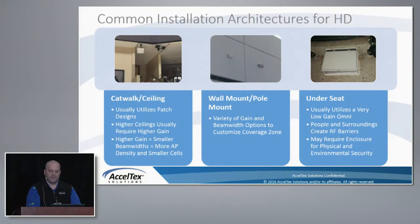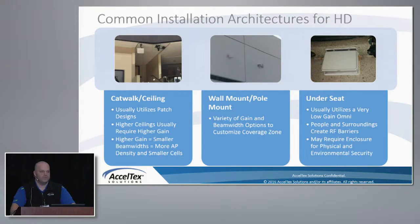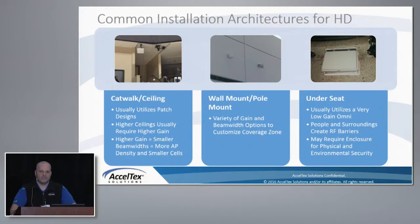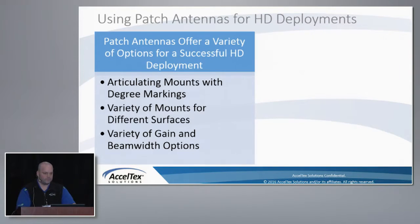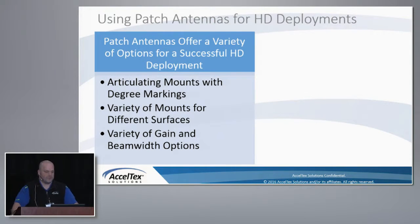Another high-density deployment would be under-seat or auditorium style. You might see this in large public venues and stadiums, using low-gain omnis and leveraging people in the surrounding environment as RF shields or barriers. It does require some enclosures to protect the APs. Patch antennas offer articulating mounts with different degree markings, mount to different surfaces — wall, pole — and a variety of gain and beam width options.